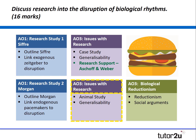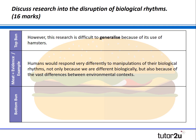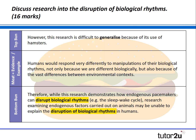Now let's criticise Morgan's animal study, looking at the idea of animal studies and generalisability — this time a single burger evaluation is all that's required. You might say: however, research is difficult to generalise because of its use on hamsters. Humans would respond very differently to manipulations of their biological rhythms, not only because they are different biologically, but also because there are vast differences in the environmental context. Therefore, while this research demonstrates how endogenous pacemakers could disrupt biological rhythms, for example the sleep-wake cycle, the research examining endogenous factors carried out on animals may be unable to explain this disruption of biological rhythms in humans, and therefore we need to treat it with caution.